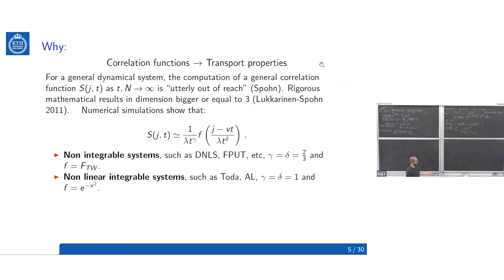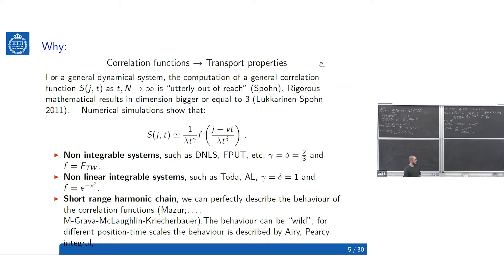For the short-range harmonic chain we actually know a lot, and one can describe perfectly how the correlation functions behave and compute them explicitly. The behavior can be quite wild — you always have an Airy peak at the extremes of the chain but in the middle you can have much more complicated structures. So these leading asymptotics do not capture all the behavior of the correlation function; we can go even deeper.